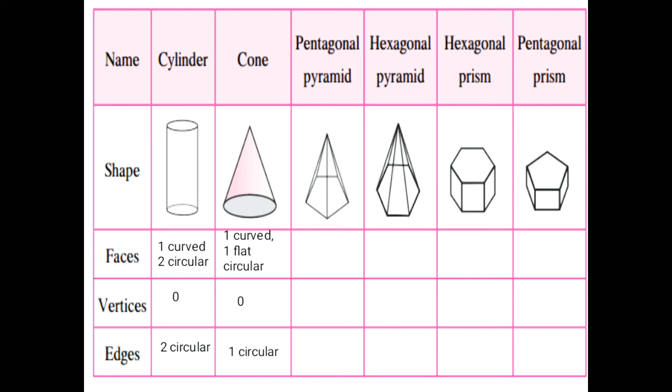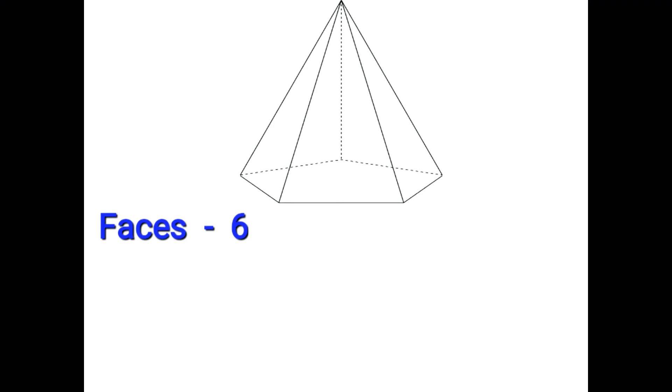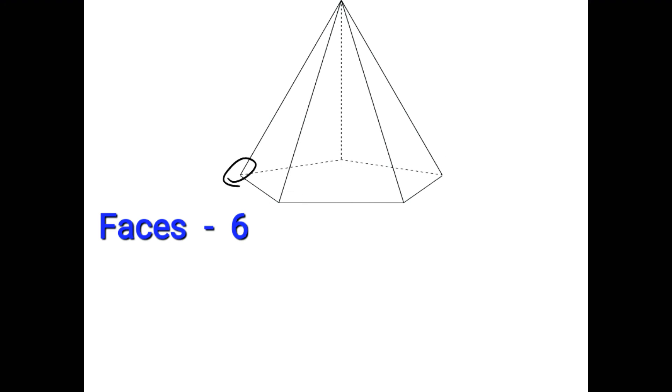The cone figure is on the second column; write the answer on the second column. Next is pentagonal pyramid. Faces: you have 6 — this triangle is the front side face, then 2, 3, 4, 5, 6. Number of faces is 6. Vertices is also 6: 1, 2, 3, 4, 5, 6 — so 6 points on the pentagonal pyramid. Number of edges is 10; 10 sides are there.